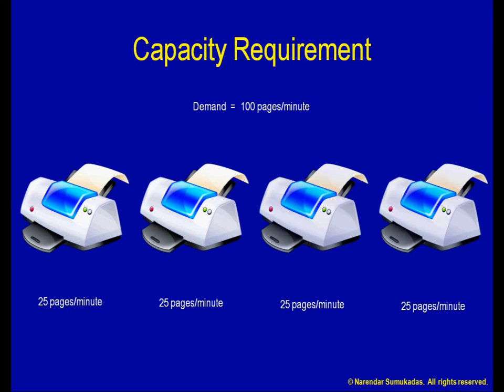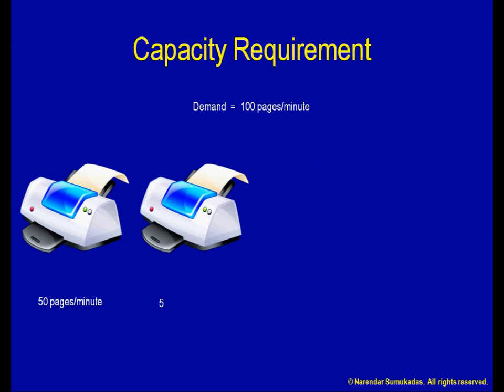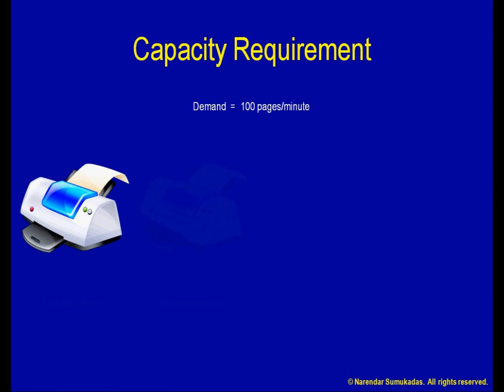Alternatively, I can get two moderately fast printers with a capacity of 50 pages per minute each. Or, I can get a single super fast printer with a capacity of 100 pages per minute.